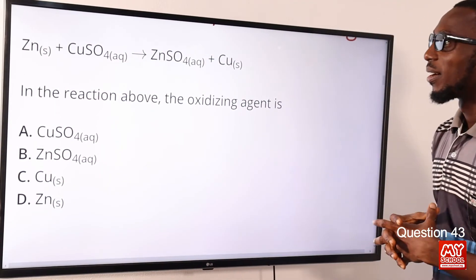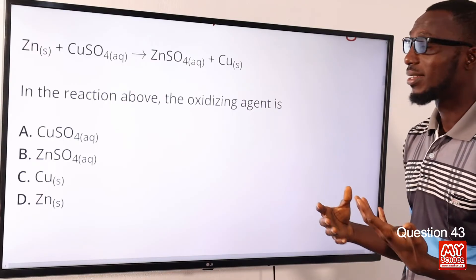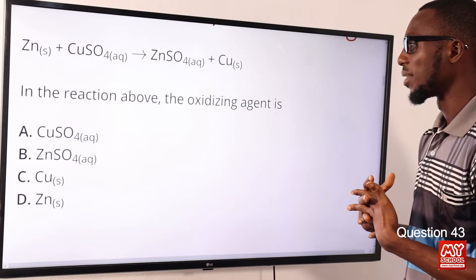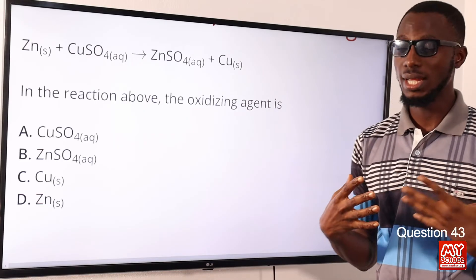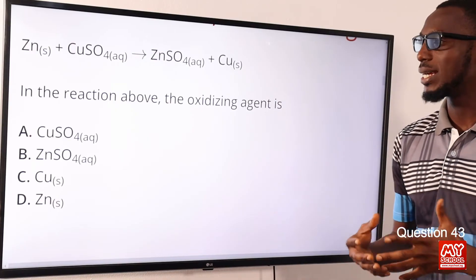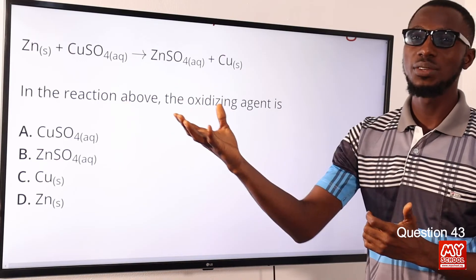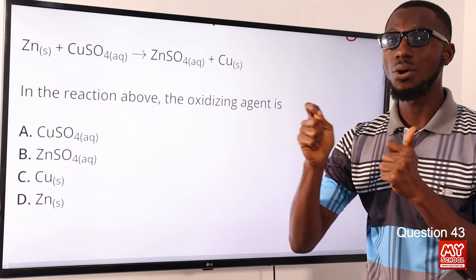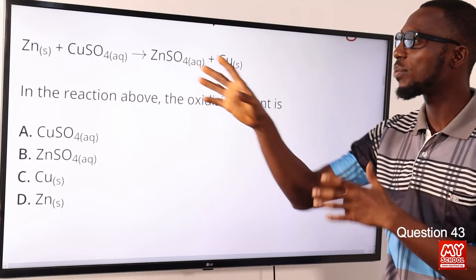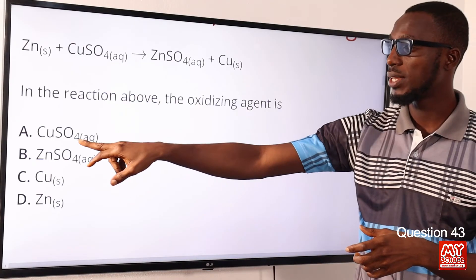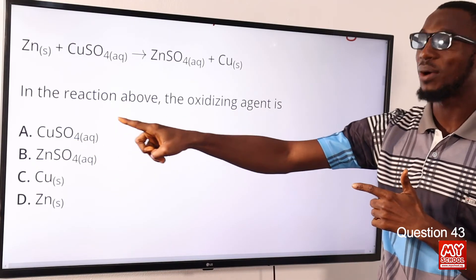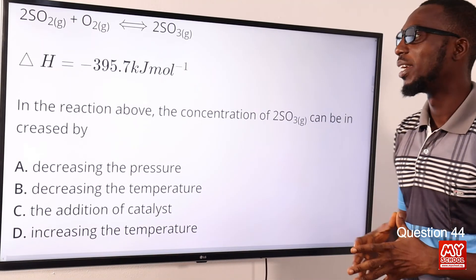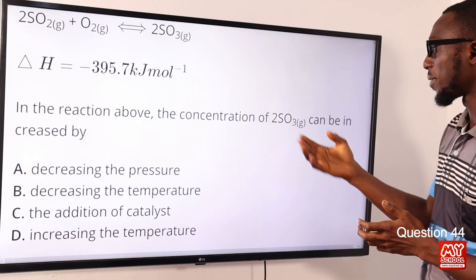Question 43: In the reaction Zn + CuSO4 → ZnSO4 + Cu, the oxidizing agent is what? An oxidizing agent donates oxygen, accepts electrons, and becomes reduced. From the reactant side, copper(II) sulfate donated oxygen and is therefore the oxidizing agent. The correct option is option A, which contains copper(II) sulfate as the oxidizing agent.